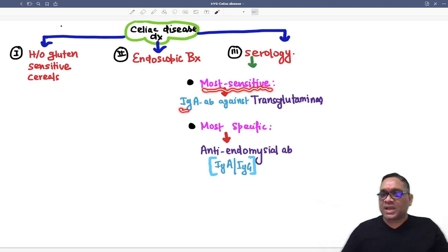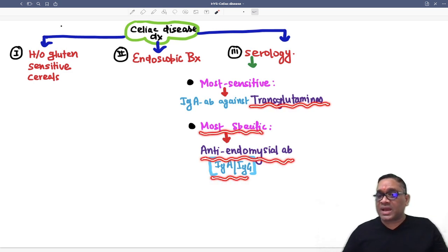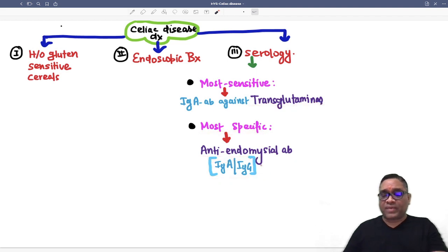On serology, two important things we have to remember. Most sensitive is the IgA antibody against transglutaminase. Most specific is anti-endomysial antibody, which will be IgA or IgG type of antibody.